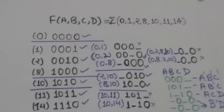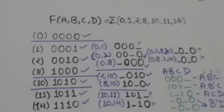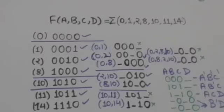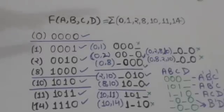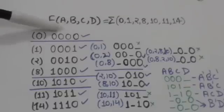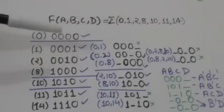The terms corresponding to the binary numbers we get at the end will be the prime implicants. To find binary representations of minterms which differ by only one bit, we will compare the numbers of one group with the numbers of the next group below it.